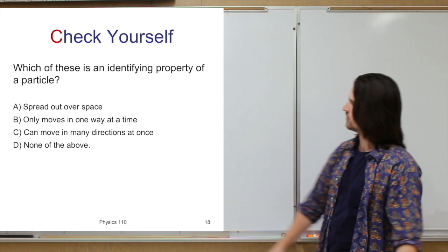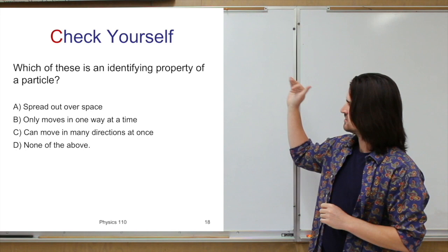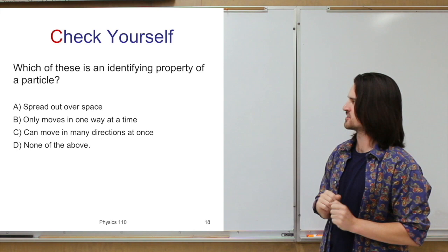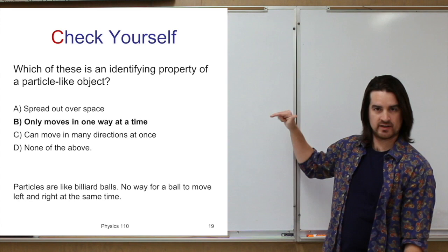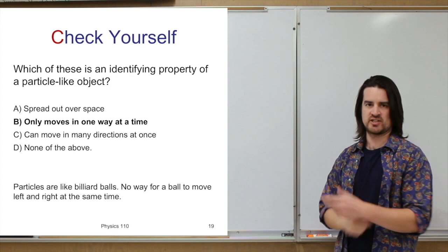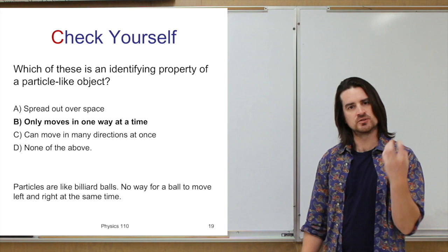Quick question: which of these things is an identifying property of a particle? Hopefully you said B — it only moves in one direction at a time. When you hear 'particle,' think of a billiard ball. A billiard ball only moves in one direction at a time; it can't move left and right at the same time.